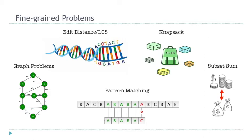In fine-grained complexity, we consider very basic and fundamental problems such as LCS, edit distance, knapsack, subset sum, pattern matching, and others. The thing all these problems have in common is that they're really simple — the algorithms are very easy and straightforward. The question we try to answer is whether these very simple algorithms are optimal or can we improve the runtime for them.